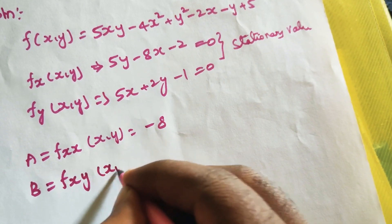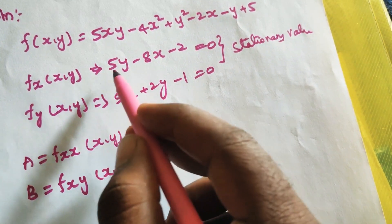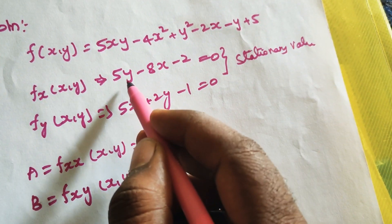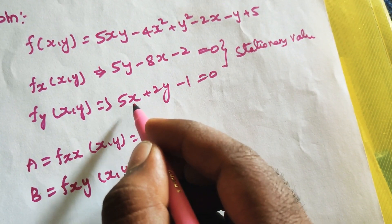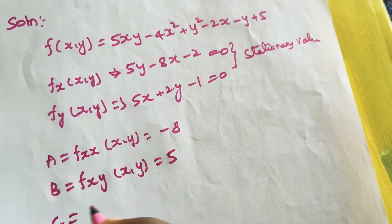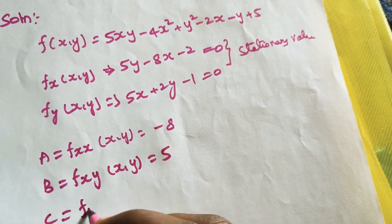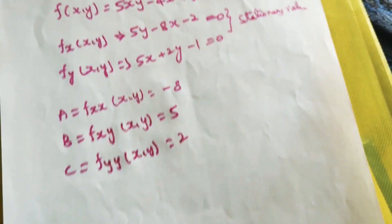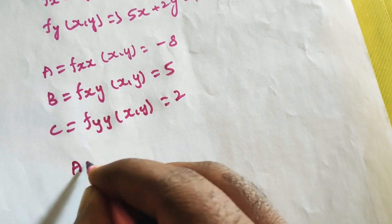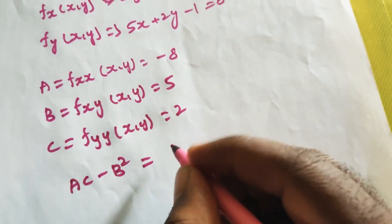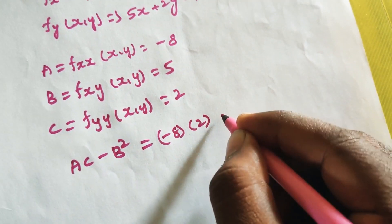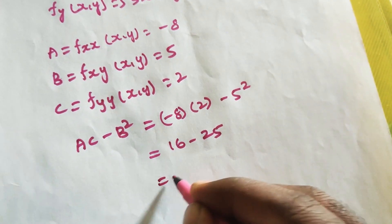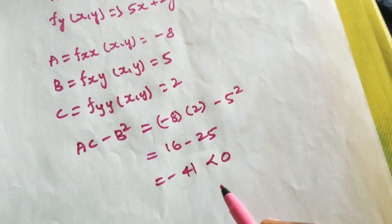B = fxy(x,y): differentiate fx with respect to y, that gives 5. C = fyy(x,y): differentiate fy with respect to y, that gives 2. So we compute ac - b²: a = -8, c = 2, b = 5. That gives (-8)(2) - 5² = -16 - 25 = -41.